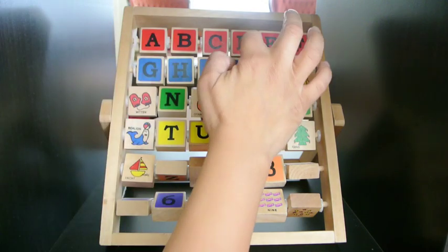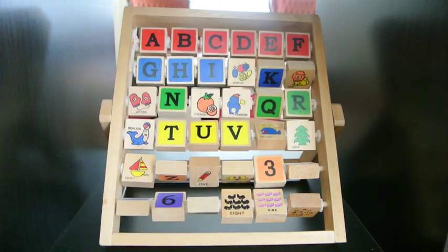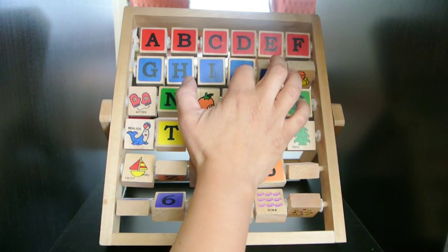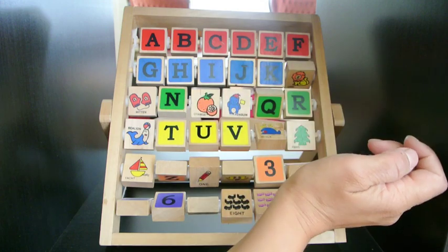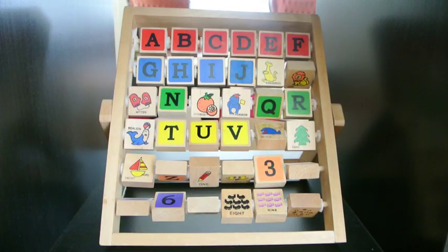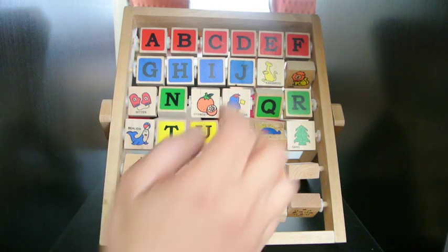J. Behind it is the word jewels. Ooh. It's very sparkly. We flip it around. And we have the letter K. And behind it we have a kangaroo. Very nice.